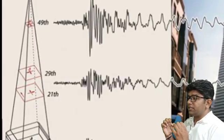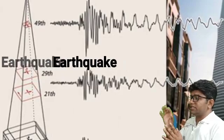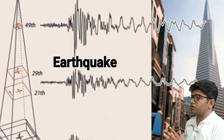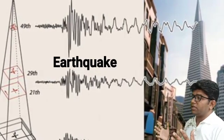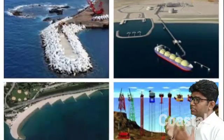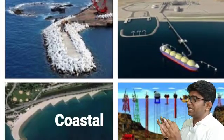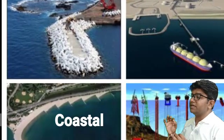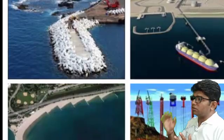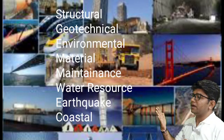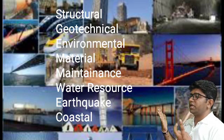The seventh career scope is earthquake engineering. Civil engineers specializing in this field create buildings and structures that can withstand the stresses of an earthquake without failing, and conduct R&D related to potential earthquake damage. Eighth is coastal engineering, where specialists manage coastal areas including marshlands and create defenses against flooding and erosion. To recap: structural, geotechnical, environmental, material, maintenance, water resource, earthquake and coastal engineering.